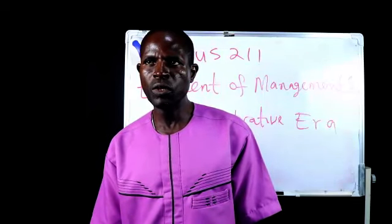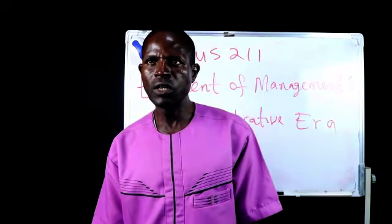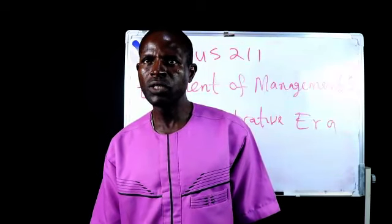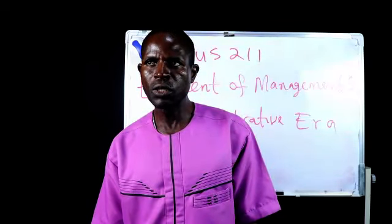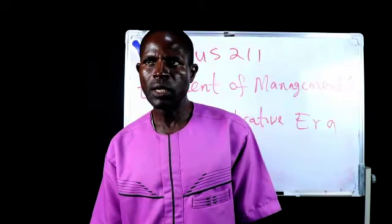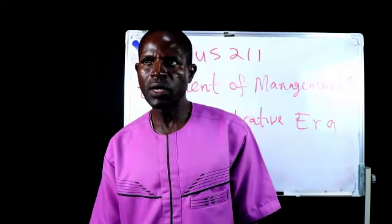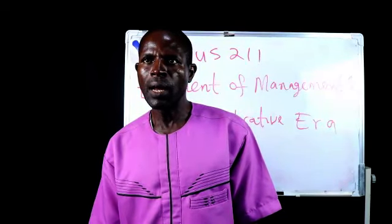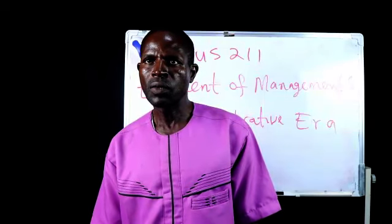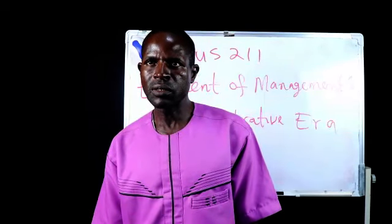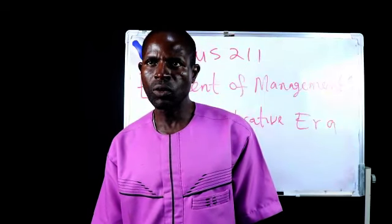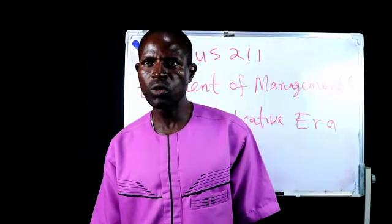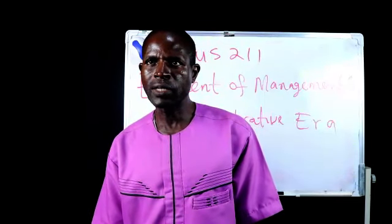Then we have the financial, which has to do with making available all the necessary resources for production to take place. And then we have security — that is, there is a need for security of the environment, the security of employment, and the security of the activities in the organization. Then we have accounting, which has to do with taking record of daily activities — all the activities going on in the organization need to be recorded to be able to take proper account.